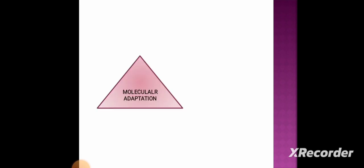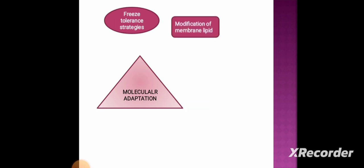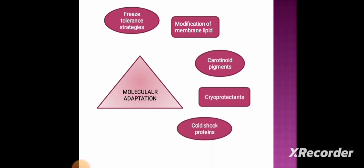This molecular adaptation is achieved by various mechanisms: freeze tolerance strategies, modification of membrane lipids, carotenoid pigments, cryoprotectants, cold shock proteins, and cold active enzymes. These are all involved in the molecular adaptation of psychrophiles.